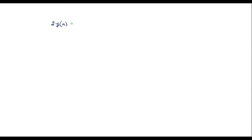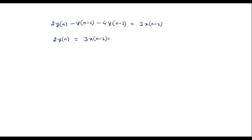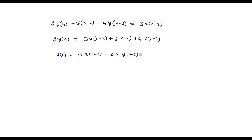Let me consider the given equation: 2y(n) minus y(n-2) minus 4y(n-3) equals 3x(n-2). Let me rewrite this expression as 2y(n) equals 3x(n-2) plus y(n-2) plus 4y(n-3). Or I can write y(n) equals 1.5x(n-2) plus 0.5y(n-2) plus 2y(n-3). Here x(n) is the input and y(n) is the output.